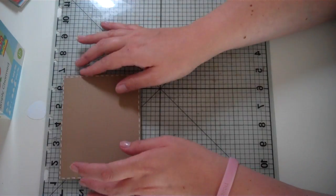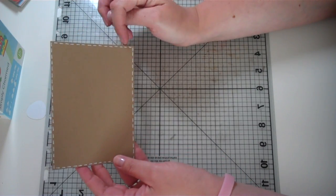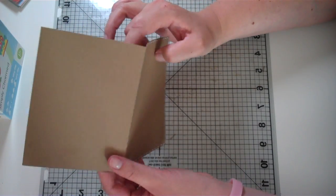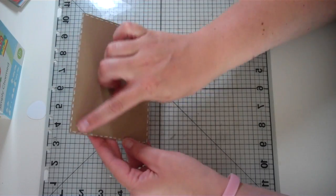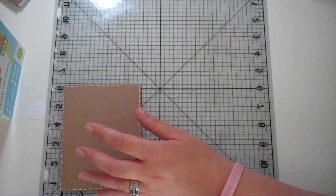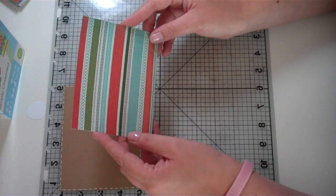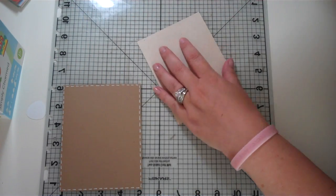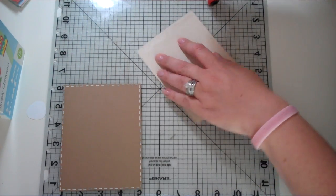We are going to be making a regular A2 size card which is 4 1/4 by 5 1/2 and this is just some craft cardstock and I went around the edge with white stitching ahead of time. And my pattern cardstock is from DCWV. It's from the Farmer's Market.